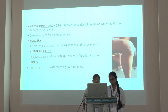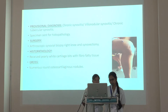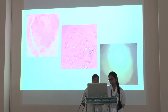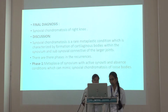Surgical specimen: arthroscopic synovial biopsy of the right knee and synovectomy were performed. The specimen was sent for histopathology. Histopathology report: fibro-fatty tissue with early white cartilage bits was seen. Grossly, numerous round osteocartilaginous nodules were identified. Final diagnosis: synovial chondromatosis.